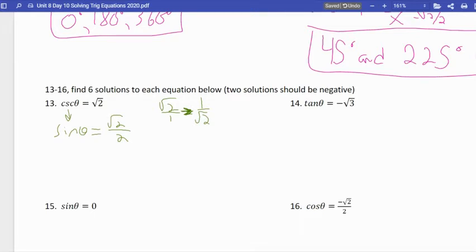Flip it. You get root two on the bottom under one, and then rationalize that denominator by multiplying the top and the bottom by root two, and you get root two over root four, which is just two. So when you flip that, you do get root two over two.